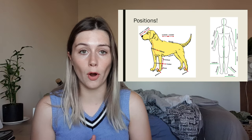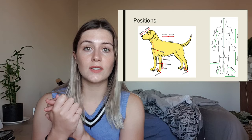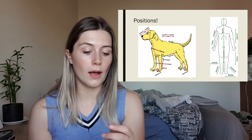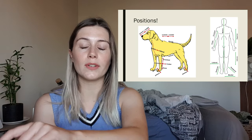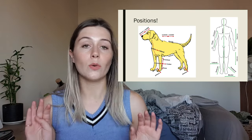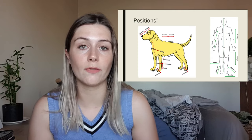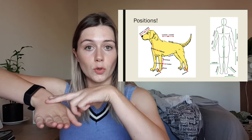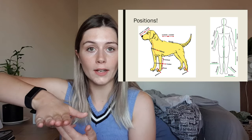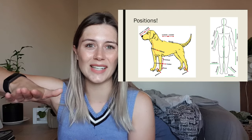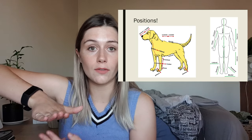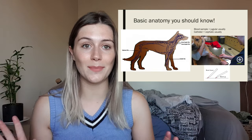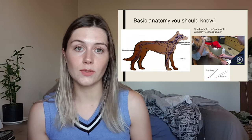Proximal and distal: distal means far away, so your hand is distal to your shoulder. Proximal means closer, so your elbow is proximal to your hand. For the feet, the top of a dog's paw is dorsal, but the bottom of a front limb is palmar — instead of ventral you say palmar — and for the hind limb you say plantar.